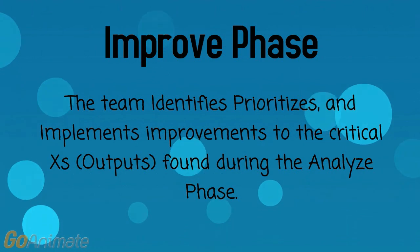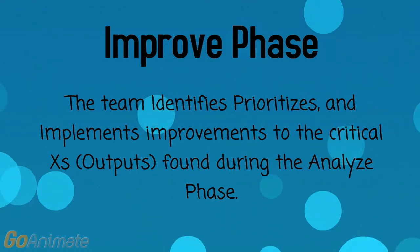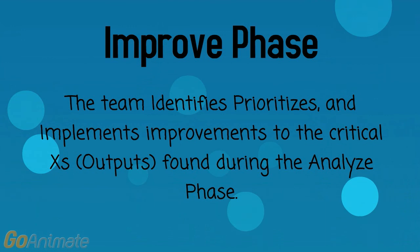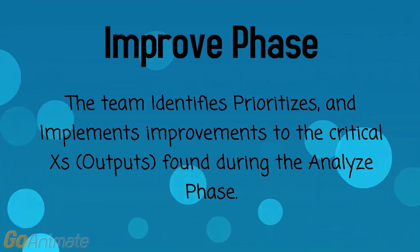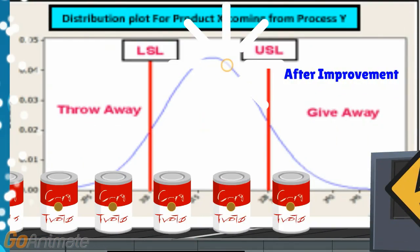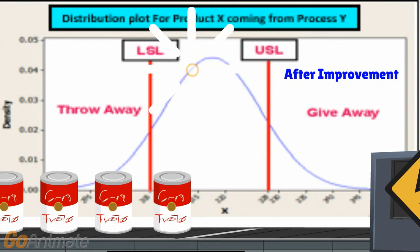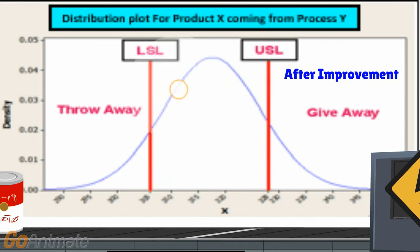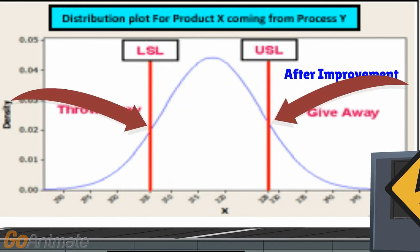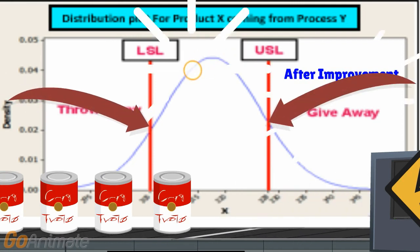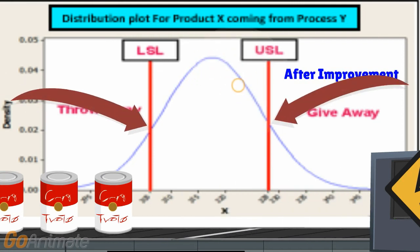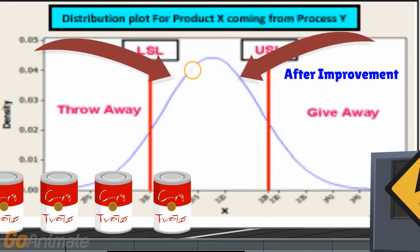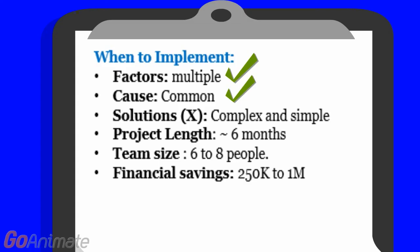In the Improve phase, the team identifies, prioritizes, and implements improvements to the critical X's found during the Analyze phase. After implementing the solutions, the new process shows: one, process variance fits well within the customer's expectations, with the weight of each can measured falling within the upper and lower specification limits; and two, the process hugs the target — the mean weight of the sample is approximately equal to the target weight. Solutions, both simple and complex, are confirmed.